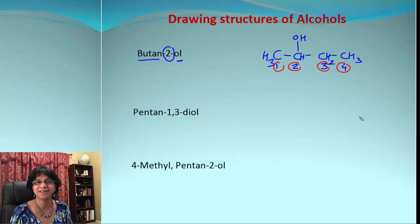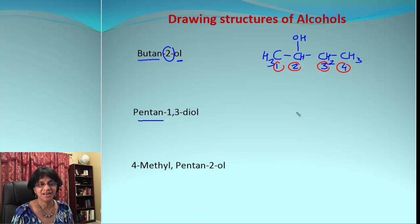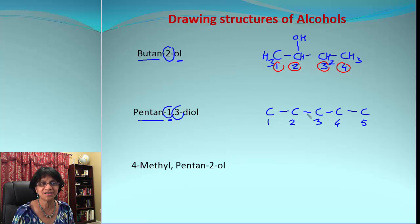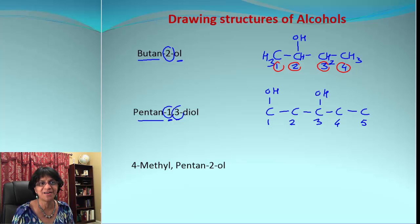Let's move on to the next one — pentane-1,3-diol. Again, let's get the carbon atom chain. Penta stands for 5, so we number those 1 through 5. After that, we need to place the OH groups at position 1 and position 3, since we have a diol — two alcohol groups.